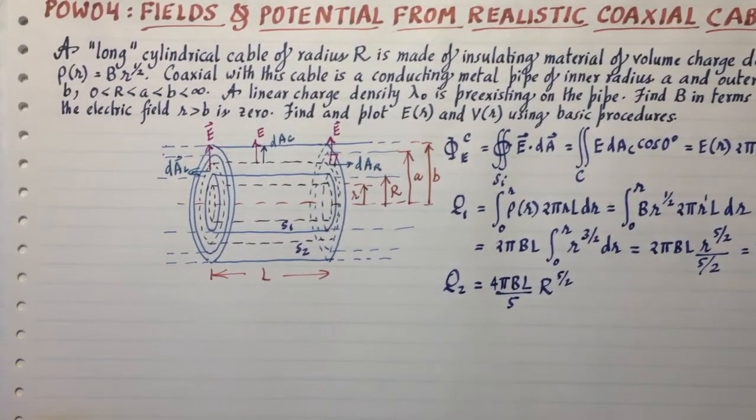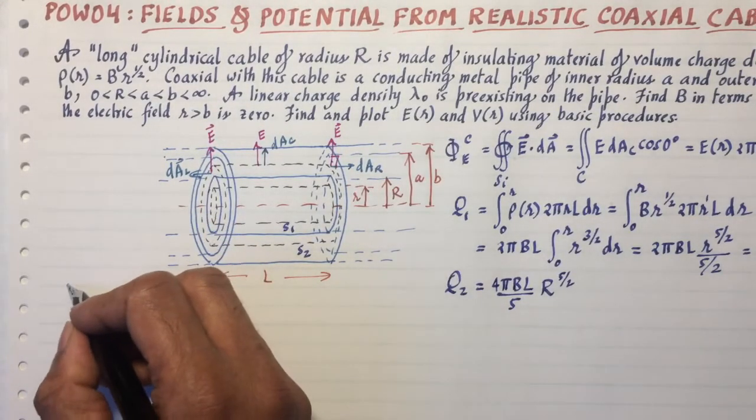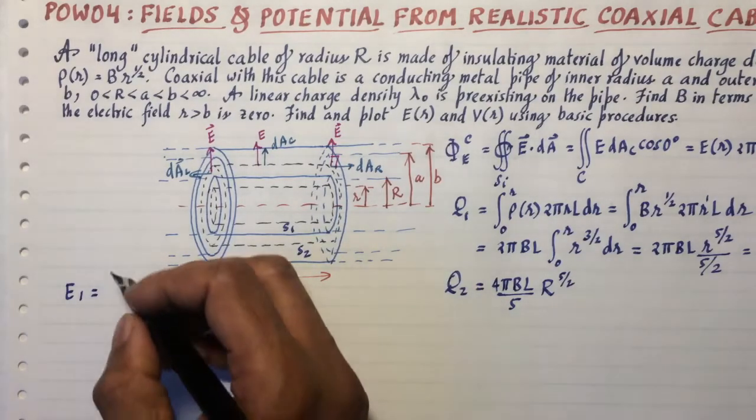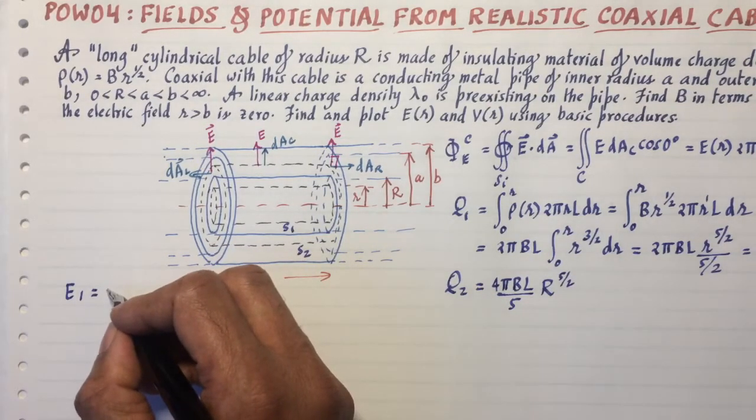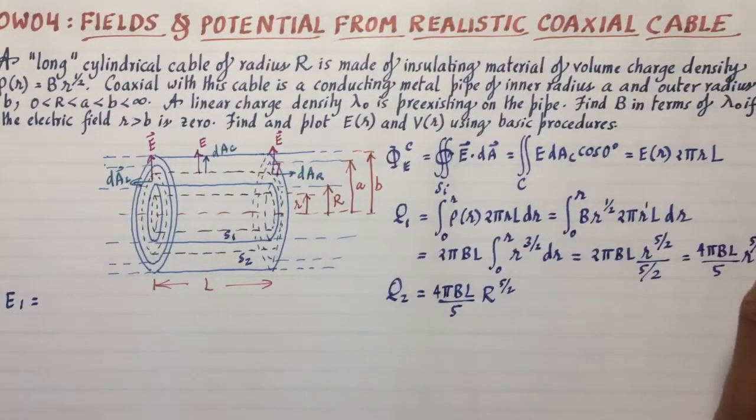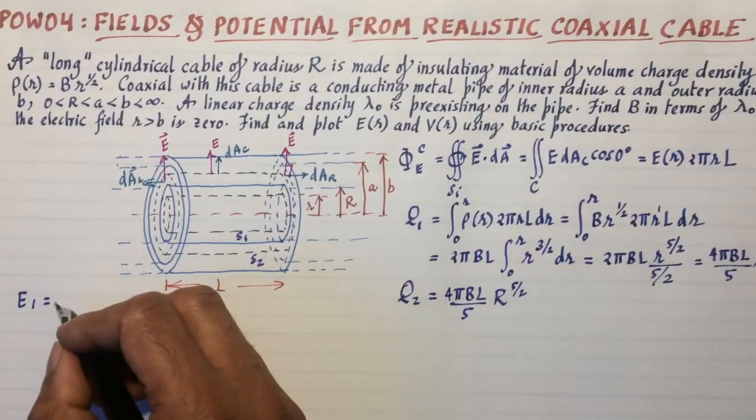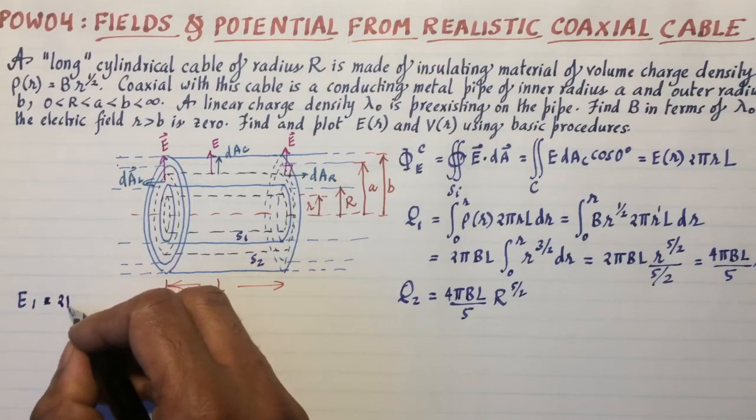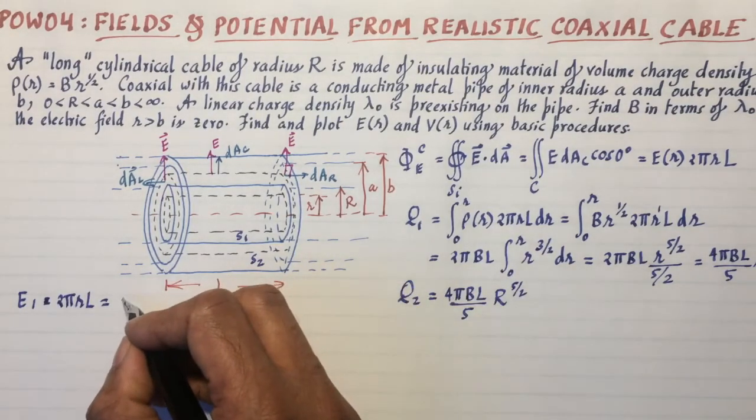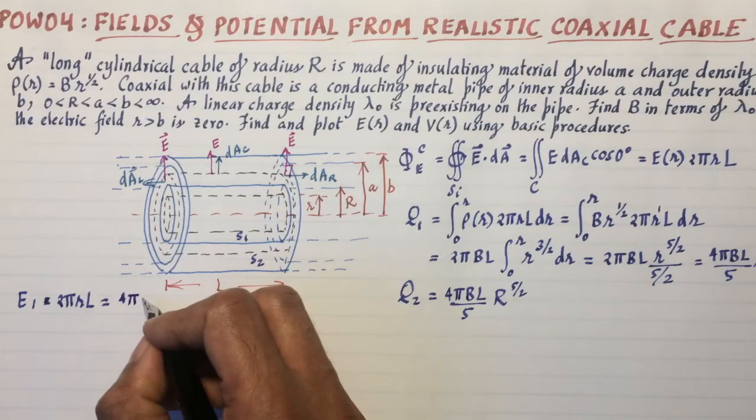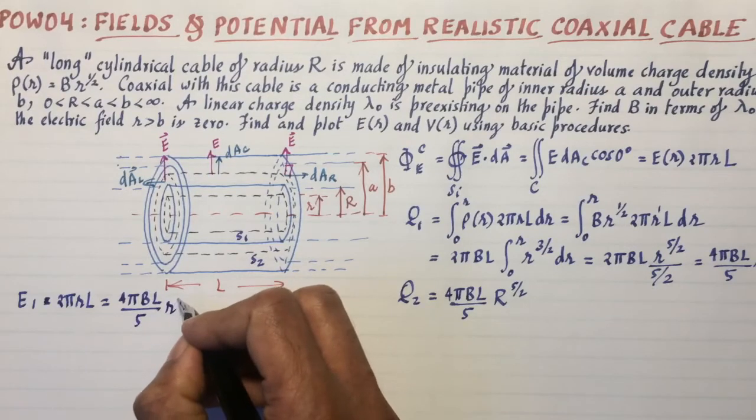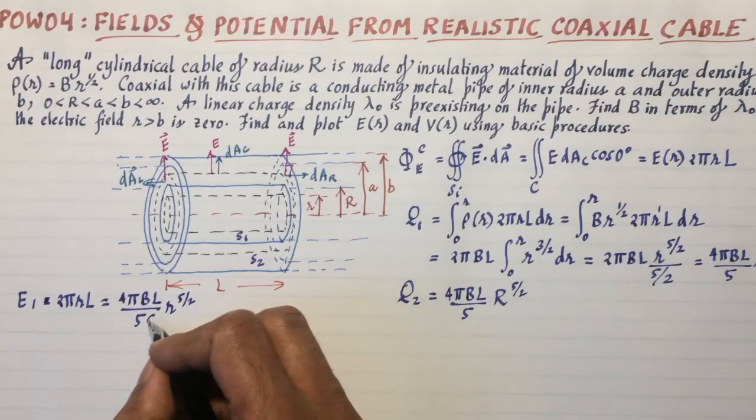Let's figure out what this is. Integral 0 to r, ρ(r) is B r^(1/2), so that's going to be B r^(1/2) times 2πrL dr. I can take out B 2πL because they're all constants. And then I'm left with integral 0 to r, r^(1/2 + 1), that's r^(3/2) dr.